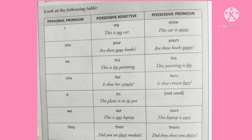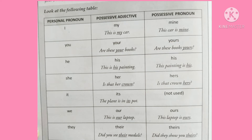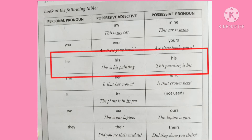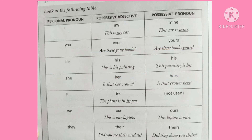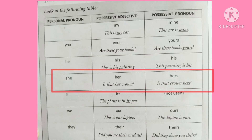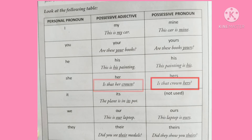For personal pronoun 'you,' the possessive adjective is 'your' and the possessive pronoun is 'yours' — no apostrophe. Example: 'Are these your books?' uses 'your' before the noun, and 'Are these books yours?' uses 'yours' as a possessive pronoun. For 'he,' the possessive adjective and pronoun are both 'his': 'This is his painting' / 'This painting is his.' For 'she,' the adjective is 'her' and pronoun is 'hers': 'Is that her crown?' / 'Is that crown hers?' For 'it,' we use possessive adjective 'its' only — no possessive pronoun.